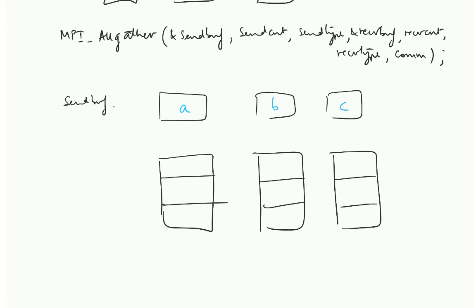So all gather you are going to get A, B, C over here, A, B, C over here, A, B, C over here. These are your send buffers and these are your receive buffers.